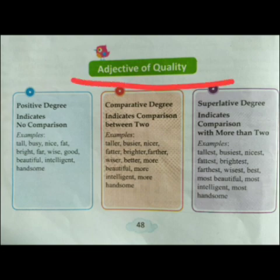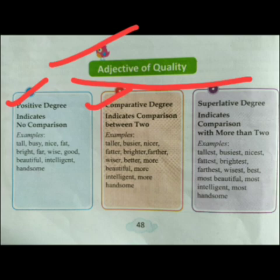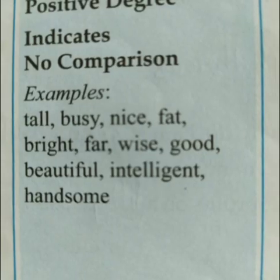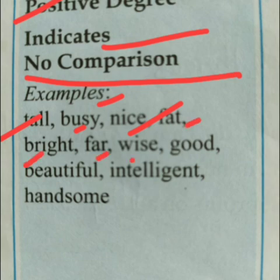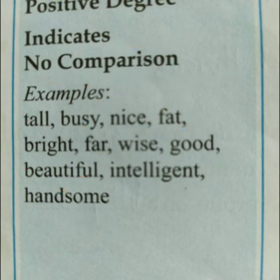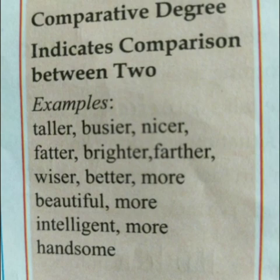Total we have three degrees of adjective of quality. Positive degree indicates no comparison — positive degree में कोई भी comparison नहीं होता है। Examples: tall, busy, nice, fat, bright, far, wise, good, beautiful, intelligent, and handsome. All of these words are positive degree.